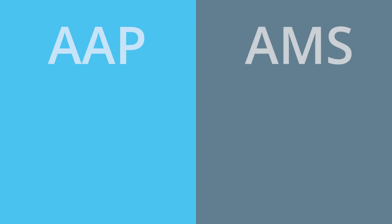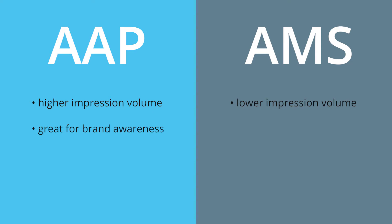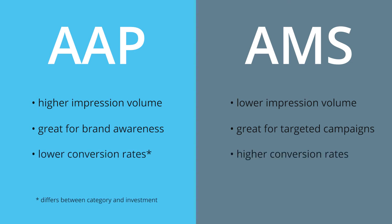Display ads with AAP have high impression volume — they reach millions of people. This is great for brand awareness, but less precise than search ads with AMS. AAP ads also have significantly lower conversion rates. Because of this wider net, it's common for marketers to pay by impressions.